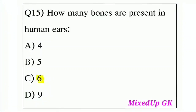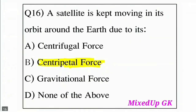Question 16: A satellite is kept moving in its orbit around the Earth due to — Option A: Centrifugal force, Option B: Centripetal force, Option C: Gravitational force, Option D: None of the above. The correct answer is Option C: Gravitational force.